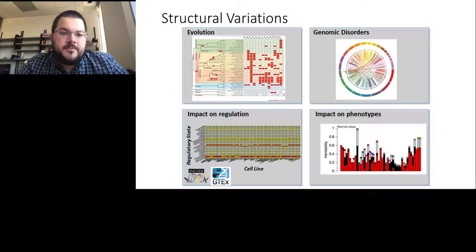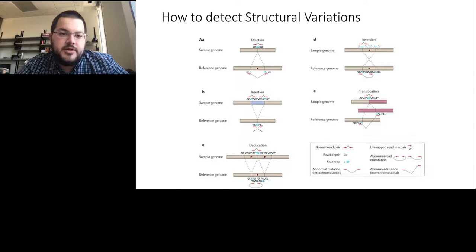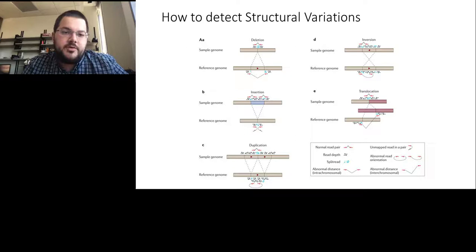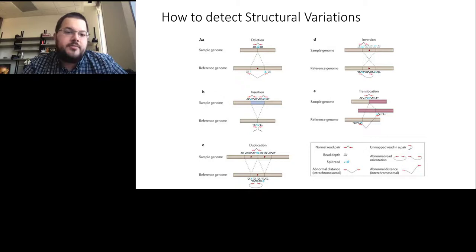Going a step back — how do we actually detect structural variants? Here is a naive view across five types of structural variants: deletions, insertions, tandem duplications, inversions, and translocations. We can often detect those via paired-end distance or paired-end reads from the Illumina machine, where we observe abnormal distances or abnormal orientation of the two pairs. Furthermore, we can leverage split-read signals — split reads are when two or more regions of the same read are mapped to different regions of the chromosome, allowing us to nail down where the breakpoints are and what type of structural variant we observe.